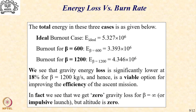We see that we are going to get zero gravity loss for β equal to infinity, which is nothing but an impulsive launch — meaning if we burn all the propellant in almost zero or very small time, we are going to get the full mechanical energy. The only thing will be that the altitude is zero, and this is something you need to understand in the correct context.